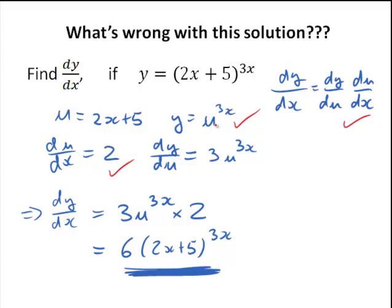We're trying to find the derivative of u to the power of 3x. But there's first of all two variables in there. There's an x and a u. How do we deal with that? And then, why would the derivative of u to the power of 3x be 3 times u to the power of 3x?